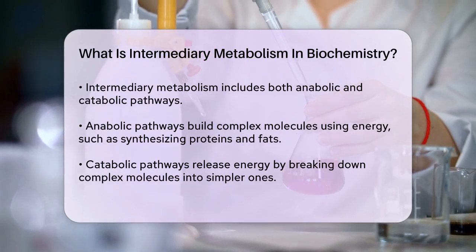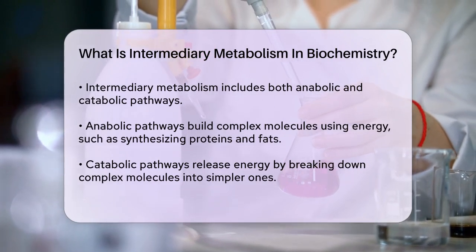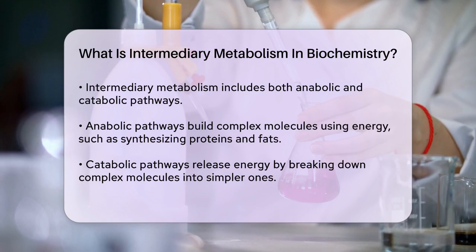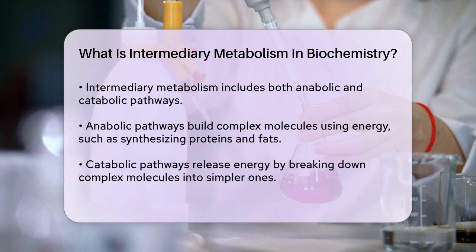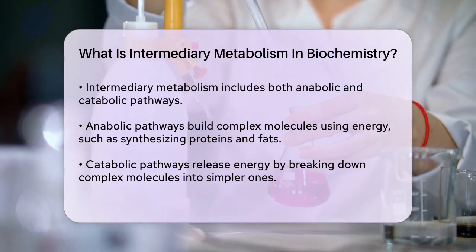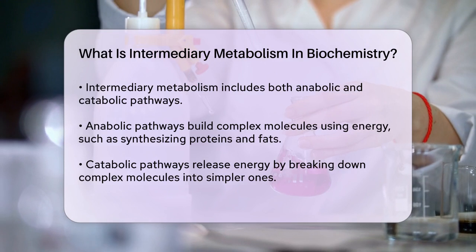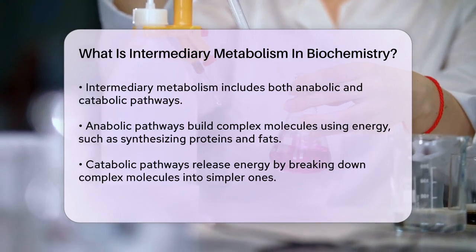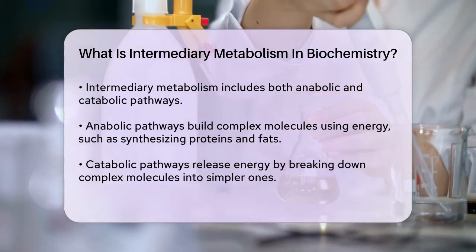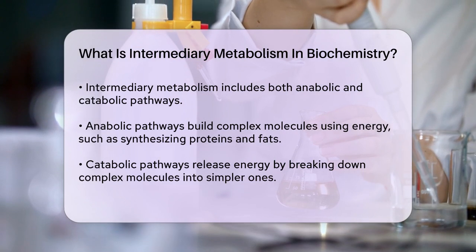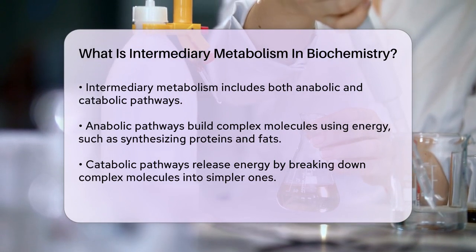On the other hand, catabolic pathways release energy by breaking down complex molecules into simpler ones, such as glucose being broken down into pyruvate and then into acetyl-CoA. These pathways are highly regulated by hormones, substrate availability, and other metabolic intermediates.